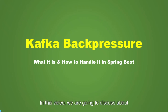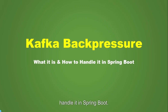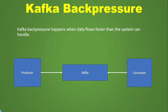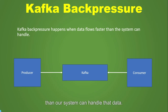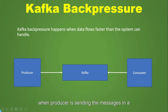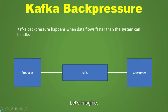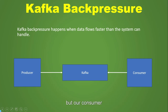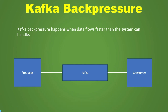Welcome back. In this video we are going to discuss Kafka backpressure — what it is and how we can handle it in Spring Boot. Kafka backpressure basically happens when data flows faster than our system can handle. In simple words, the producer is sending messages at a very fast pace that the consumer cannot keep up with. For example, the producer sends 1000 messages in 10 milliseconds but the consumer can only process 200 messages in those 10 milliseconds — so 800 messages are still waiting.